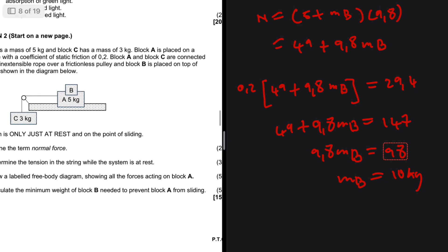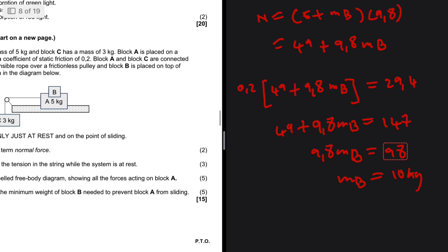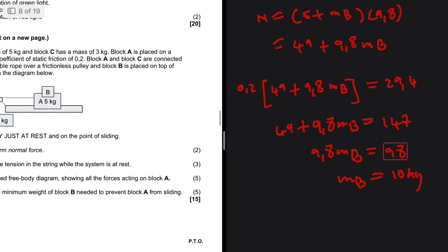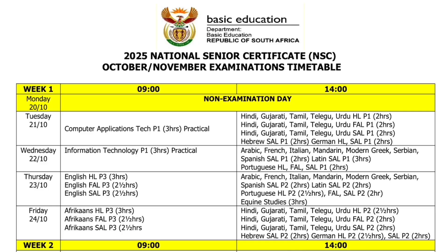The question asks for the minimum weight of block B, not the mass. So I need to convert: weight equals mass times gravitational acceleration.